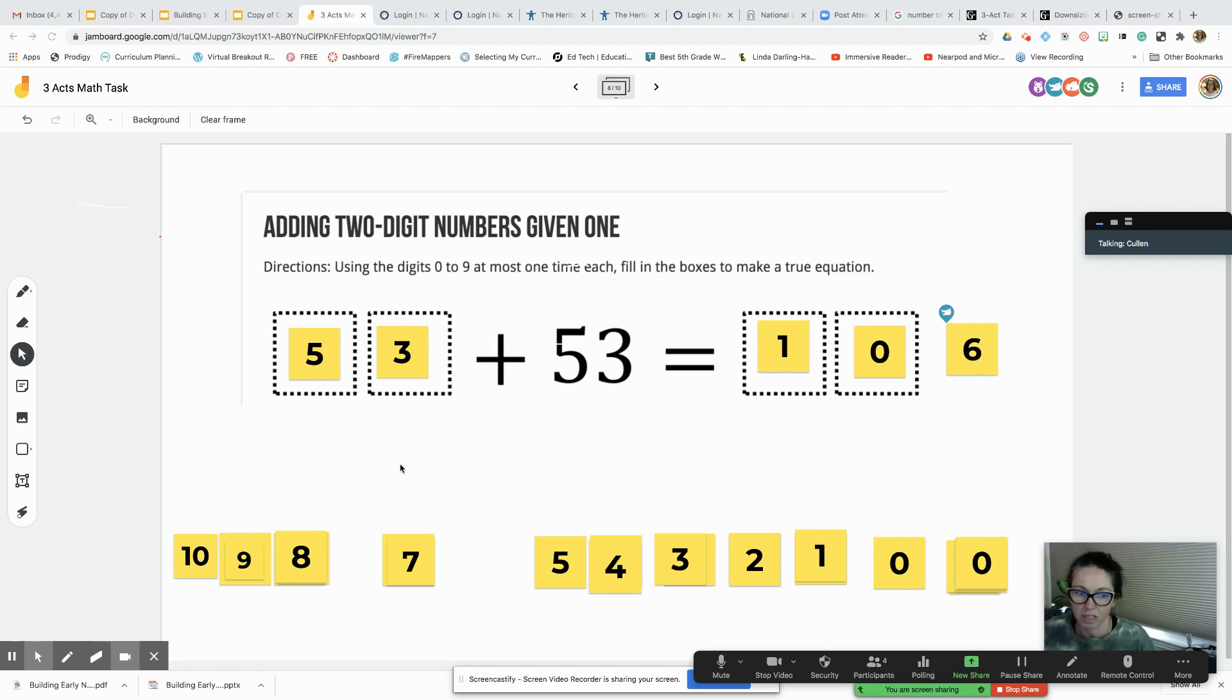What I did was, I know that 50 plus 50 equals 100 off the bat easily, and then 6 plus 3 plus 3 equals 6, so then I combined those two numbers and I got that answer. Very good! Everyone give me a thumbs up if you agree that 53 plus 53 is 106.